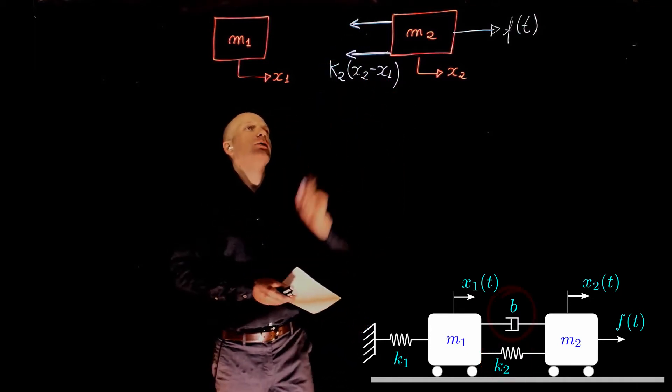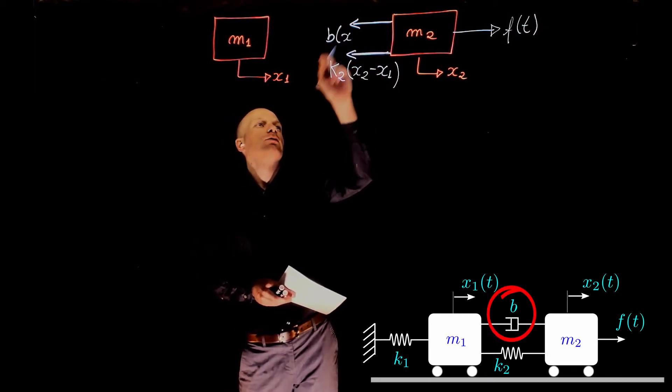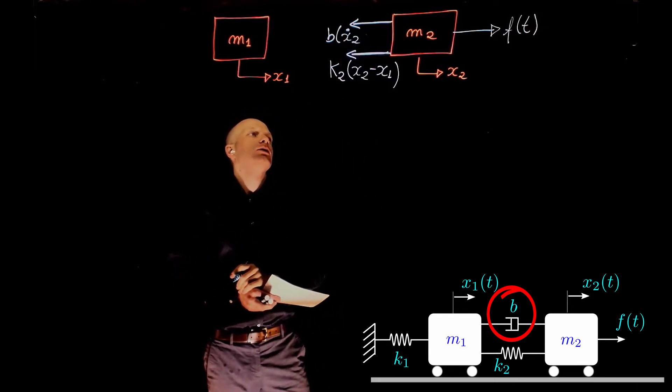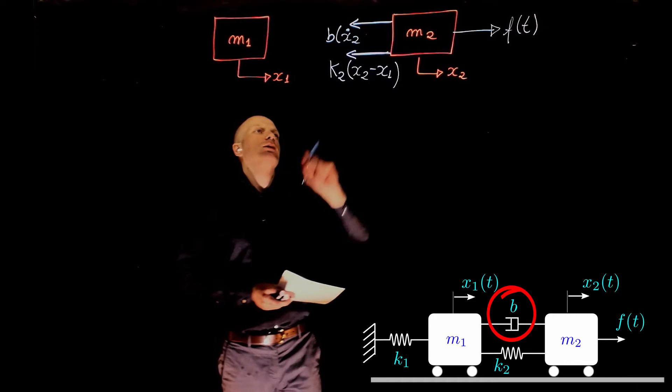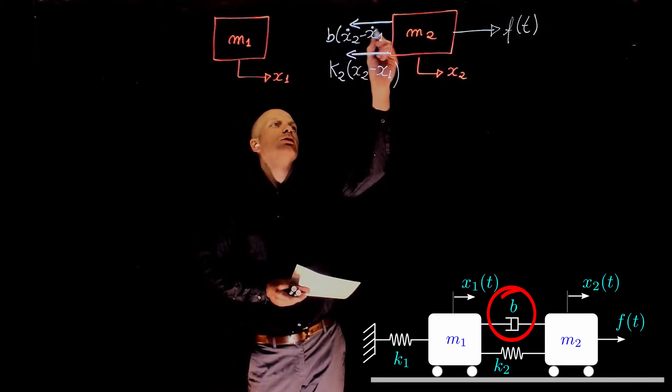And the damper will create a force b, coefficient of viscous friction, times the relative velocity between masses M1 and M2, that is x2 dot minus x1 dot.